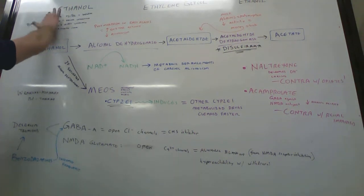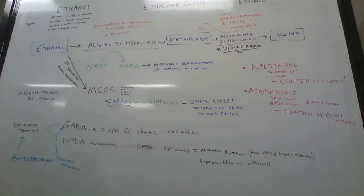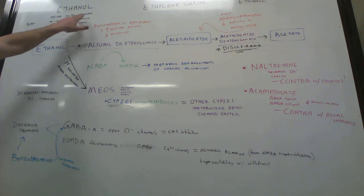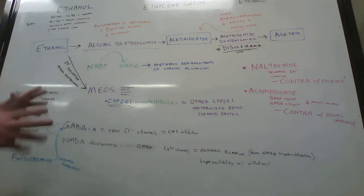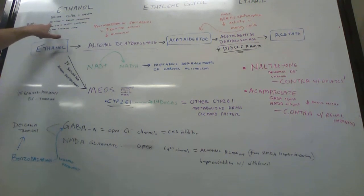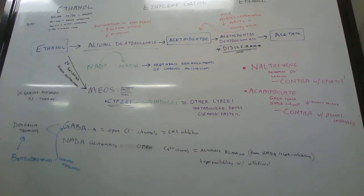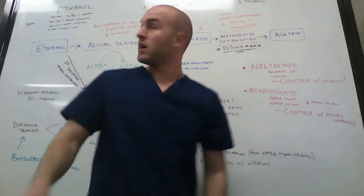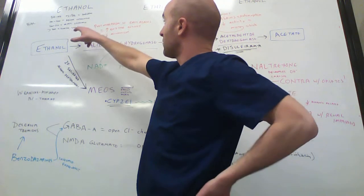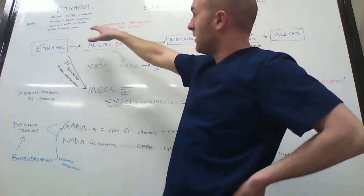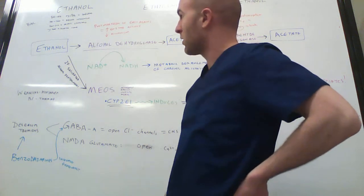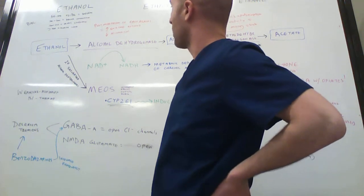So for ethanol, a blood alcohol concentration of 50 to 100 milligrams per deciliter is going to cause some mild sedation and some of the positive effects people like with alcohol. With a blood alcohol concentration of 100 to 200, that's what you consider somebody who's drunk or intoxicated. When it gets up to 200 to 300, they become stuporous and they start vomiting. And if it gets up to 400 or greater than 400, it can lead to death and coma.